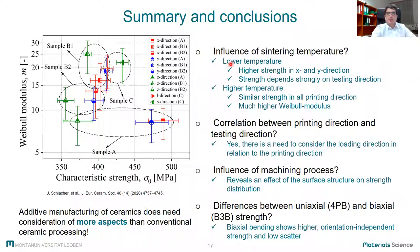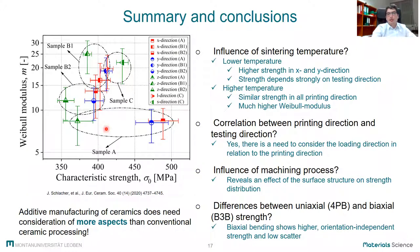To summarize the results and findings, a diagram shows the Weibull modulus over the characteristic strength of all samples. Addressing the questions: Is there an influence of sintering temperature? Yes — higher sintering temperature means similar strength in all printing directions with much lower scatter and higher Weibull modulus, with only slightly lower strength in x and y compared to lower sintering temperature. Furthermore, there is a correlation between printing direction and testing direction which must be kept in mind for mechanical characterization. In addition, the positive effect of the machining process on strength results was confirmed. Last but not least, printing discs with higher sintering temperature and thinner printing layers tested in biaxial bending yielded orientation-independent strength with low scatter.